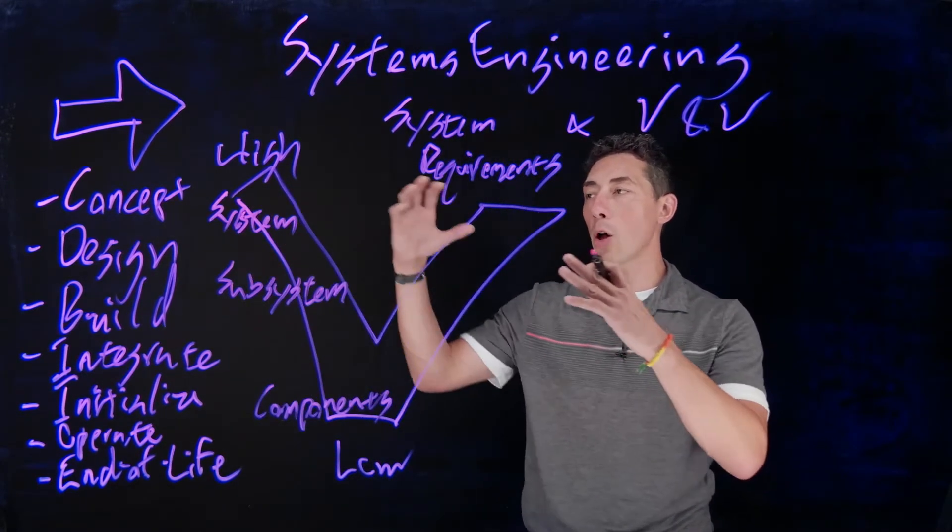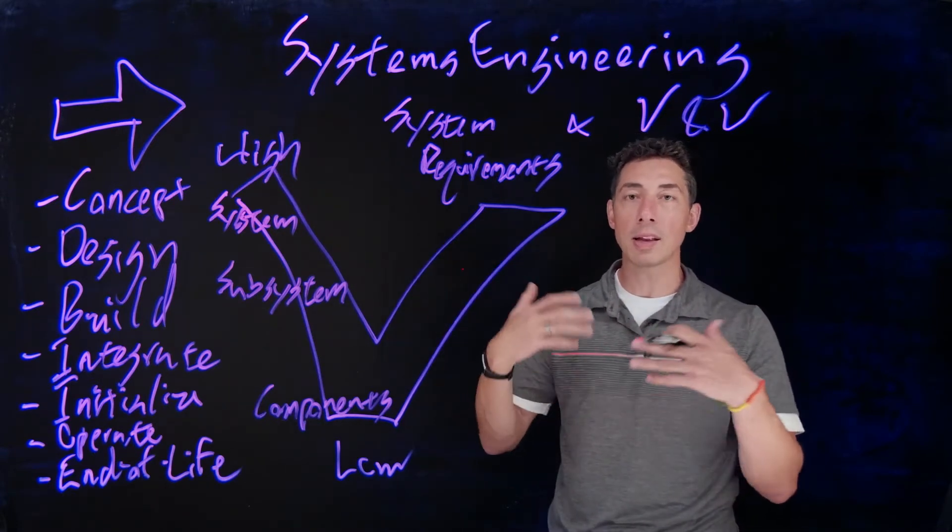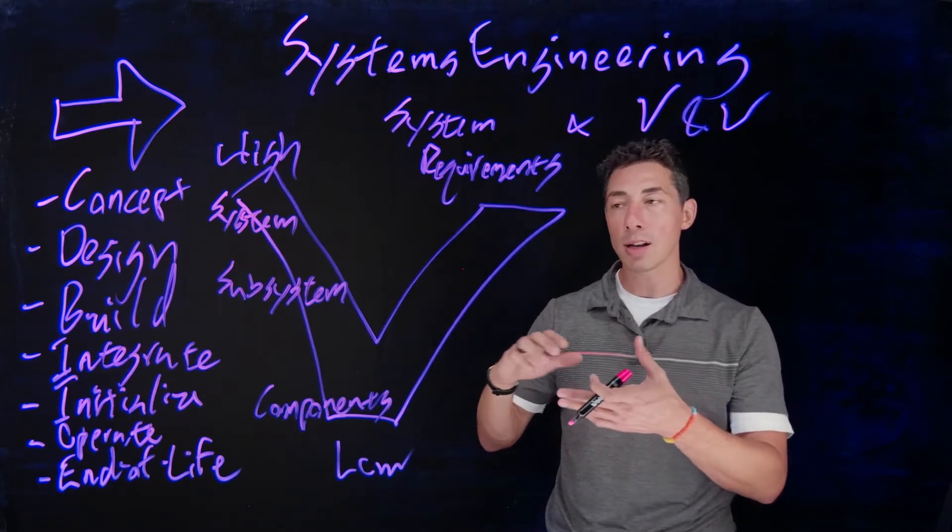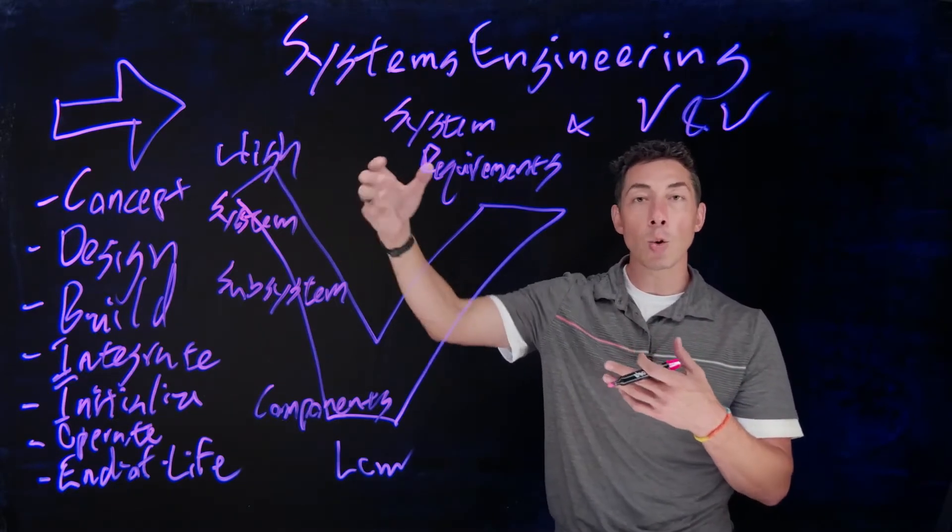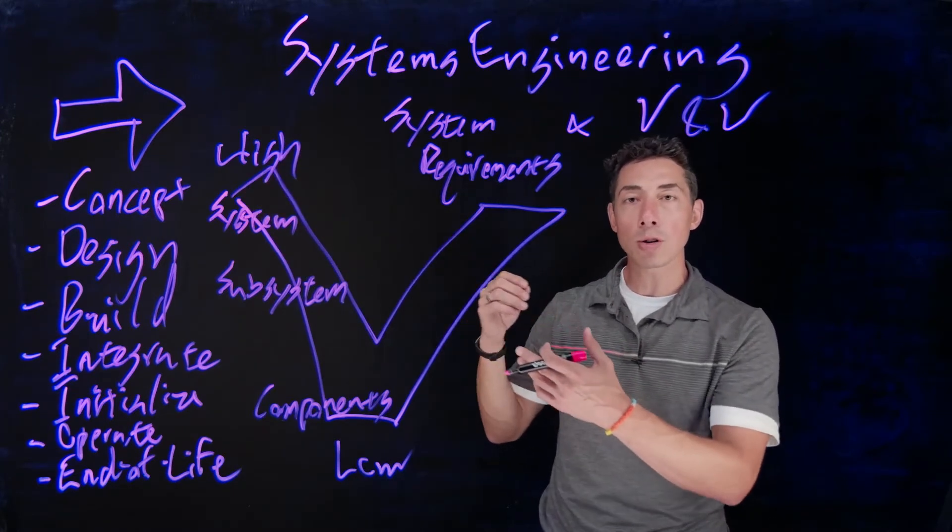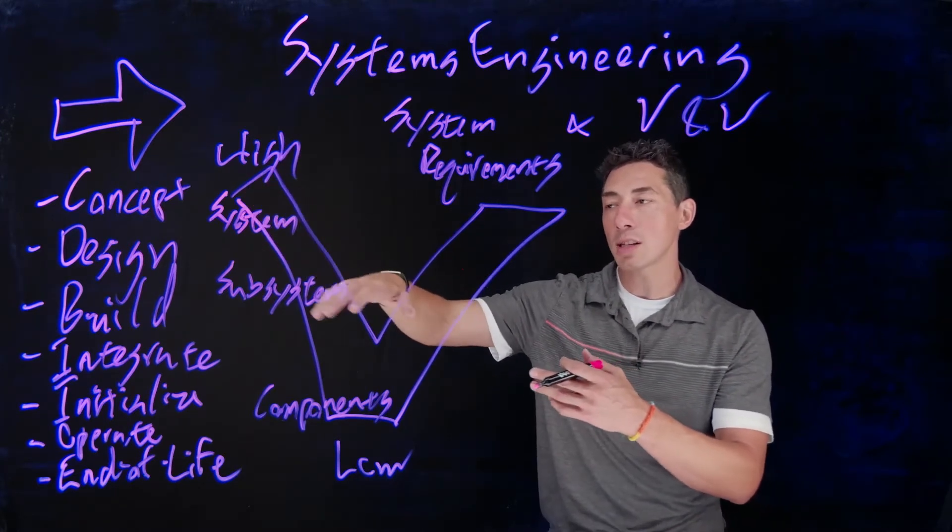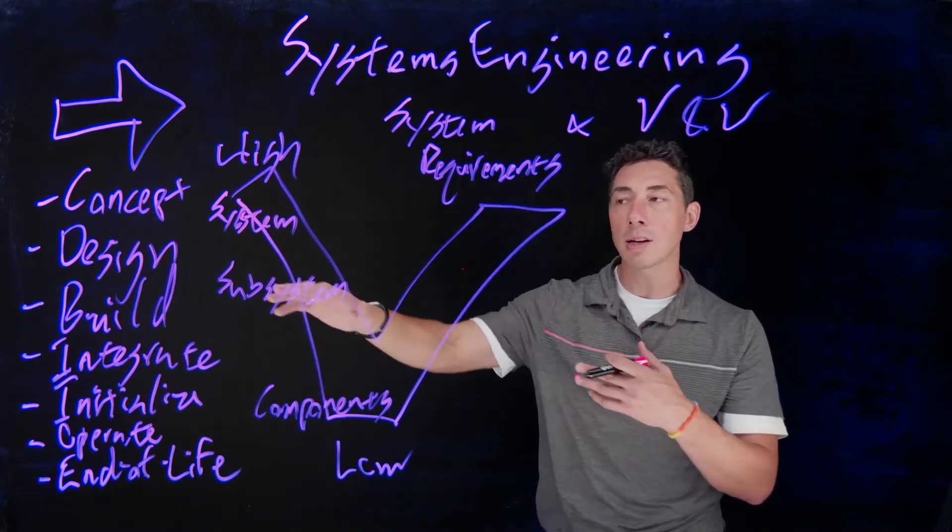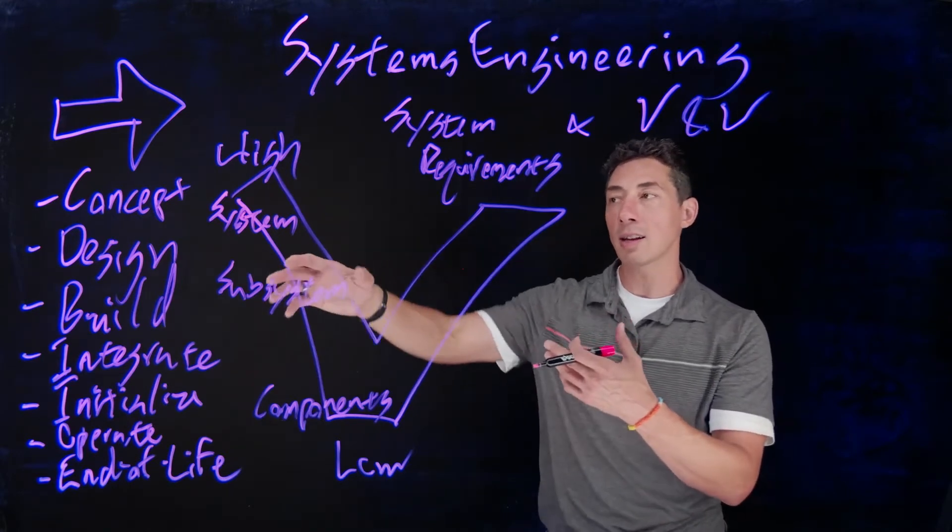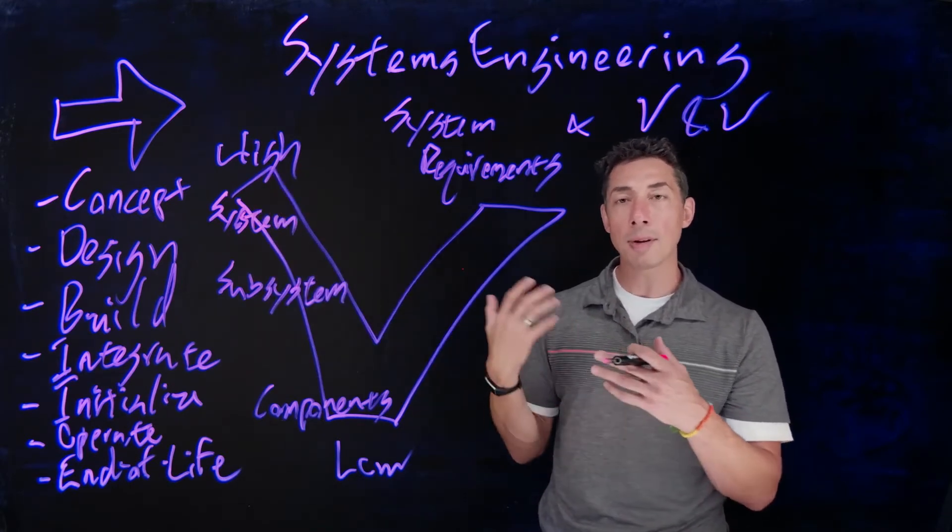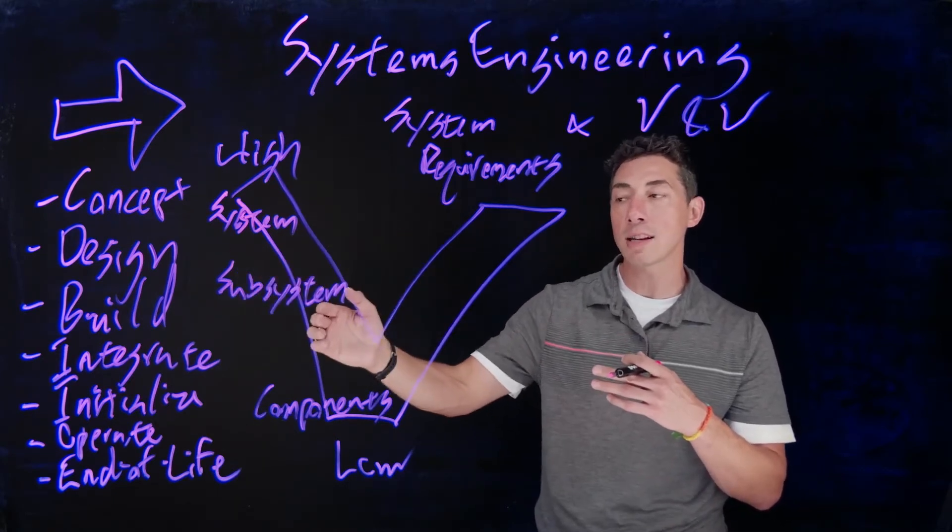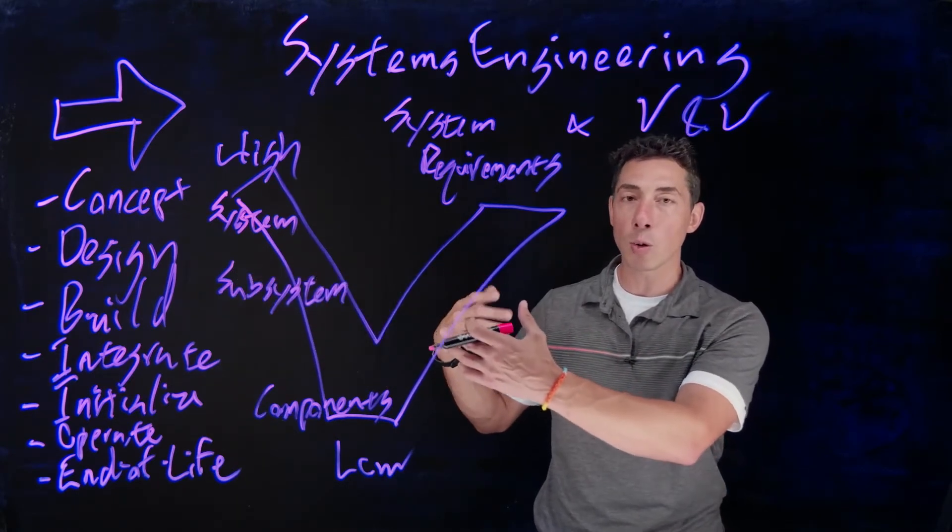And you're going to take all these system requirements. So I want my imaging system to be able to capture images this quickly on this type of targets this often. And in order to do that, you're going to define the high level system requirements. And then you're going to say, all right, in order to meet those requirements, I'm going to take each of those and I'm going to break them down into the subsystems. And I'm going to say, I need a payload that's capable of collecting these system level requirements. I'm going to need a power system that's this capable. I'm going to need a comm system. I'm going to need a ground station this capable. And each one of those will have its own set of requirements.